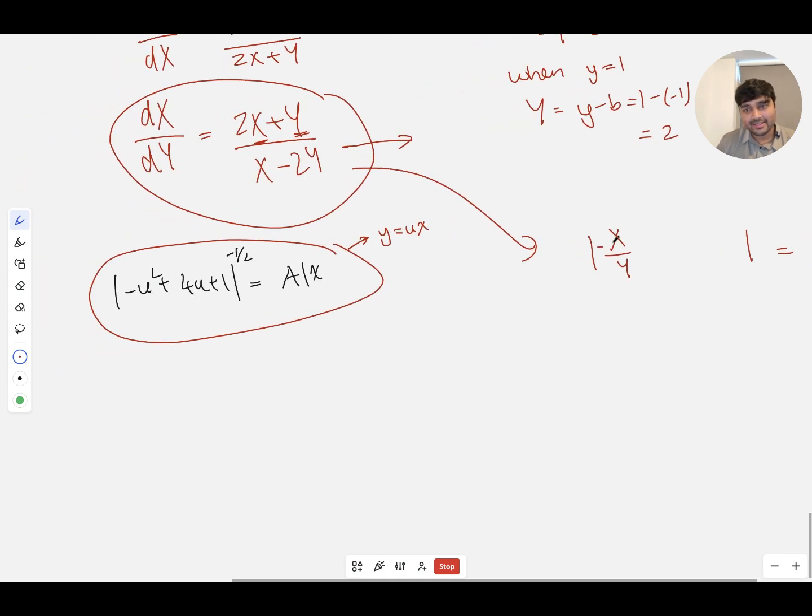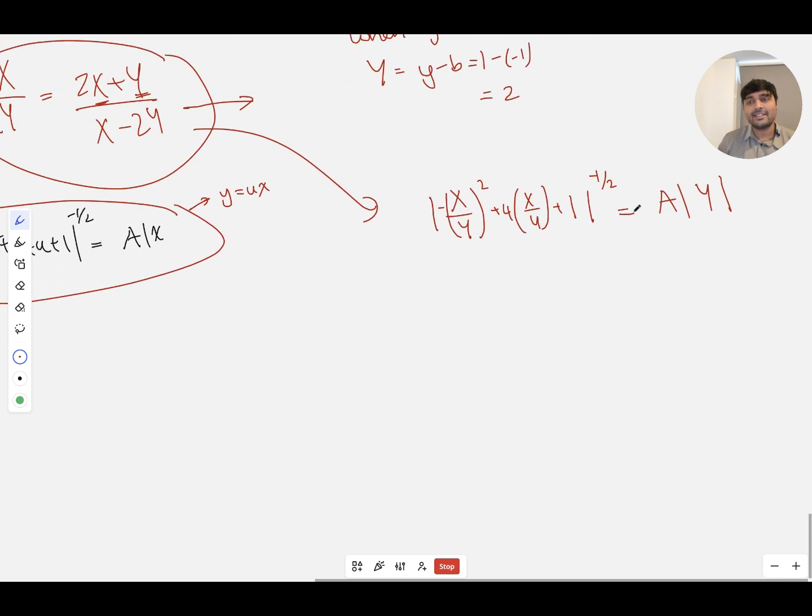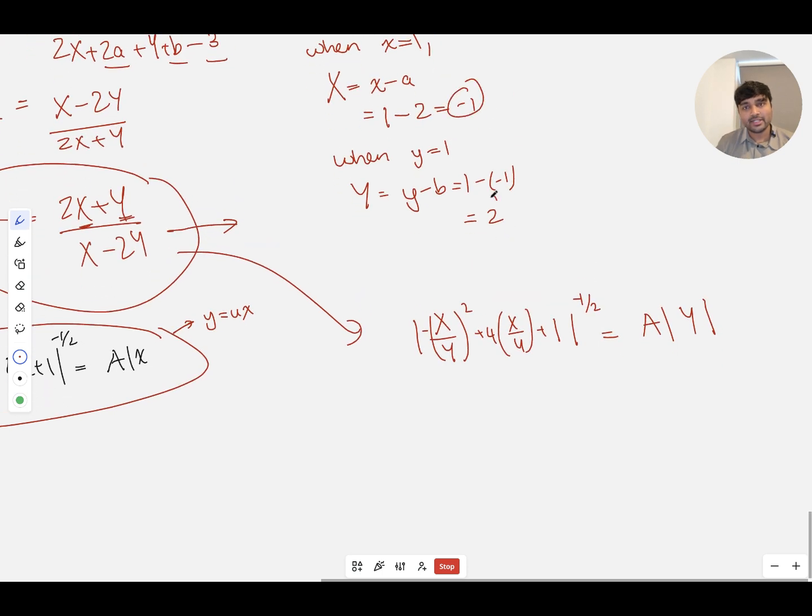And this equals some constant a times capital Y. And now we can sub in these boundary conditions here. When capital X is -1, capital Y is 2. And so if I sub that in, I've got the absolute value of (-½)² + 4 times (-½) + 1 all to the power of -½ equals a times 2, or 2a.